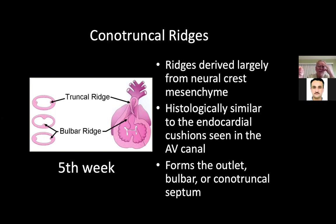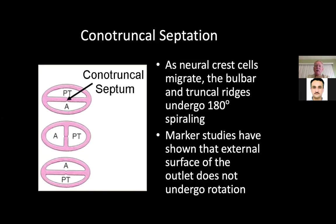Histologically, it's similar to the endocardial cushion seen in the AV canal. It forms the outlet bulbar or conal truncal septum — what we often call the supracrystal septum or the subaortic or subpulmonary septum. As neural crest cells migrate, the bulbar and truncal ridges undergo a 180-degree spiral.